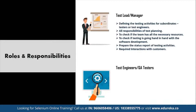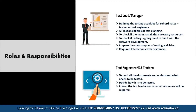The second level is the Test Engineers or QA Testers. They are responsible for reading all documents and understanding what needs to be tested, deciding how it should be tested, informing the test lead about required resources, developing test cases and prioritizing testing activities, executing test cases and reporting defects, defining severity and priority for each defect, and carrying out regression testing when changes are made to the code. Here are the 7 most important steps to becoming a test automation engineer.